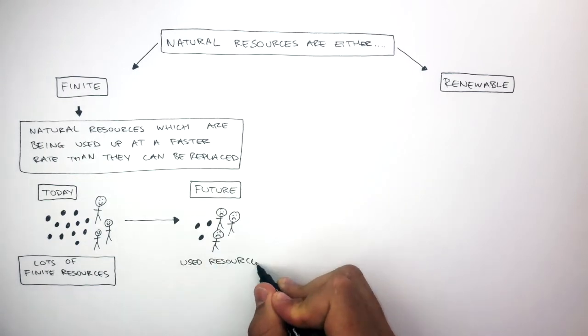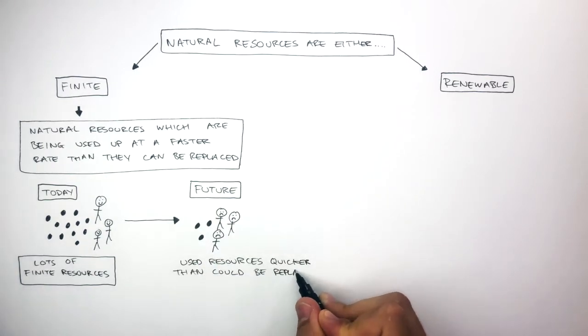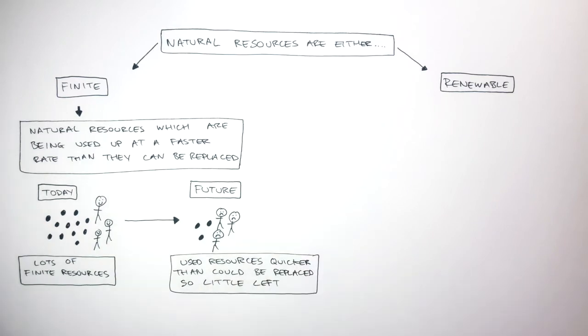We've used the resources quicker than they could be replaced, so there's little left. This is not a sustainable way of living, as the needs of future generations cannot be met due to the actions of past generations.